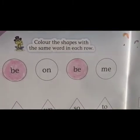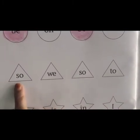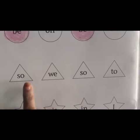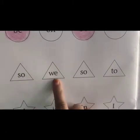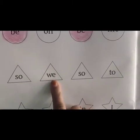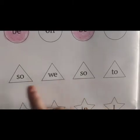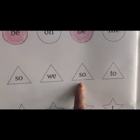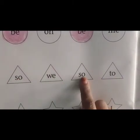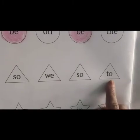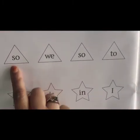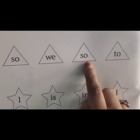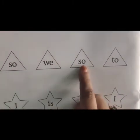Now next — triangle. The first word is S-O. Your next word is W-E-B. Then S-O again. Are these both the same? Yes. So S-O and S-O you have to color. T-O? No. So S-O and S-O you have to color.